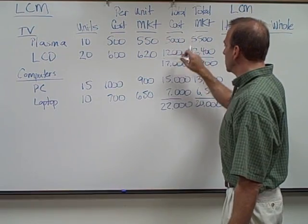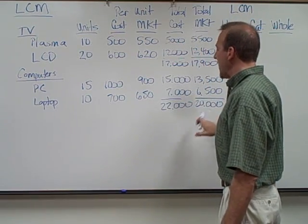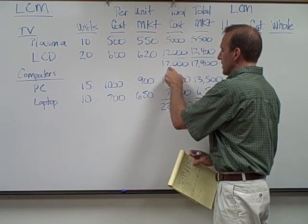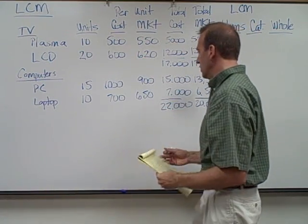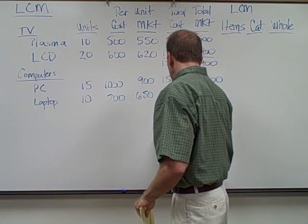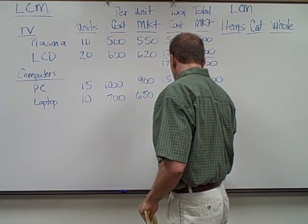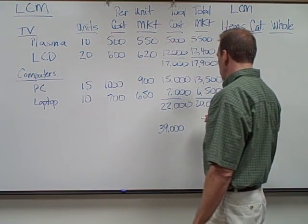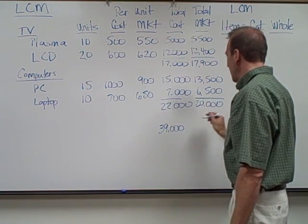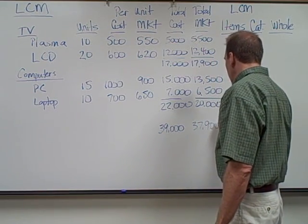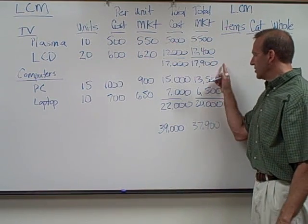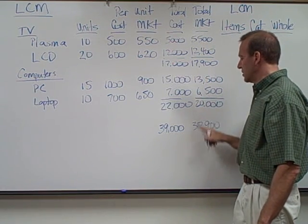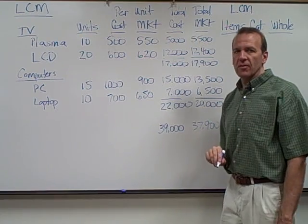Totaling those up, the computer category subtotal for cost is $22,000 ($15,000 plus $7,000), and the market subtotal is $20,000. The grand total cost across both TV and computer categories is $39,000, and the grand total market value is $37,900.